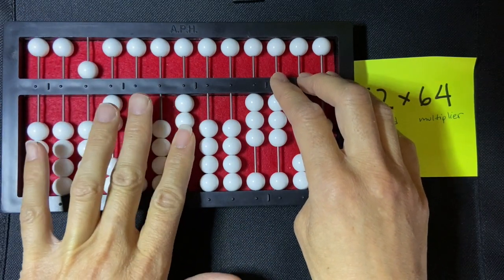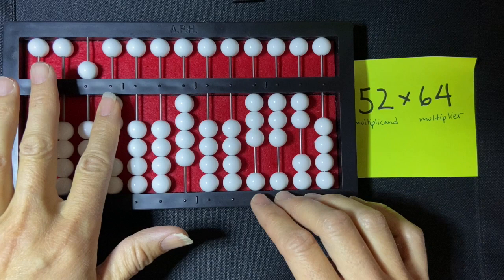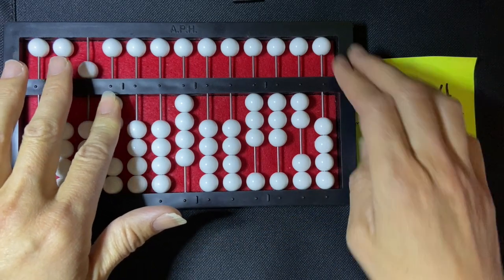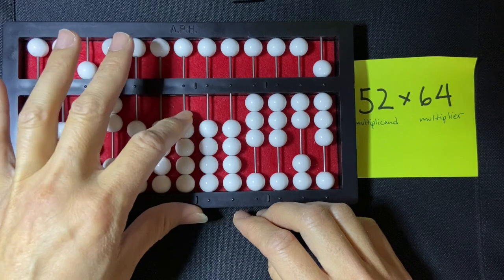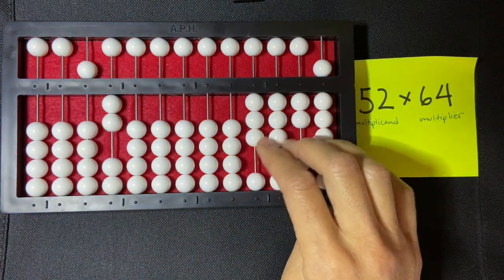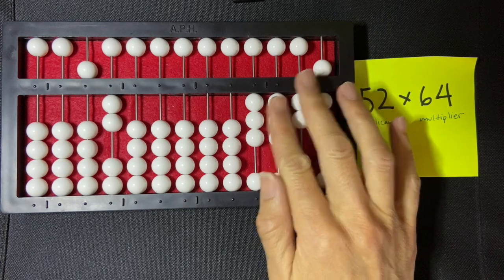Then I'm going to say 4 times 2, which is 8, and I can set that directly also. I'm going to clear my multiplier, and then I'm going to read my product, and the product that I got is 3,328.